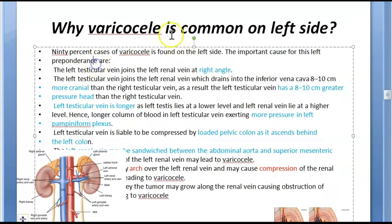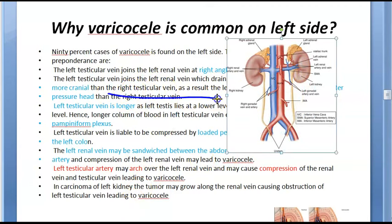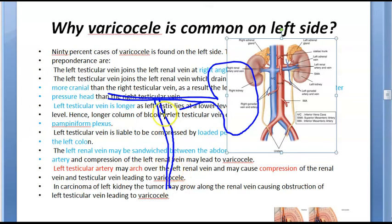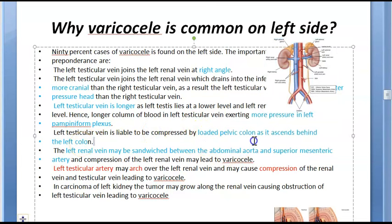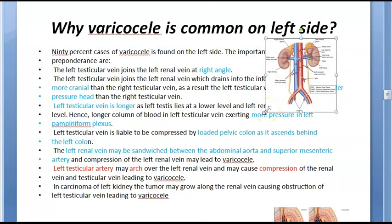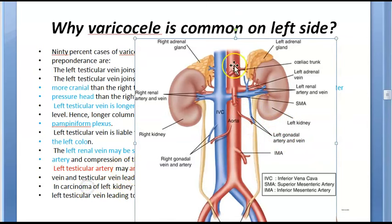Why is varicocele more common on the left side? The left testicular vein drains at a right angle into the left renal vein, has to go more cranially, and drains against greater pressure. The valve may be absent or weak. Additionally, the colon can put pressure on it, and there may be a loaded pelvic colon. The left renal vein may also be sandwiched between the aorta and the superior mesenteric artery, compressing it.